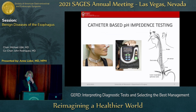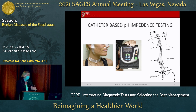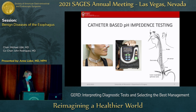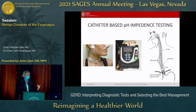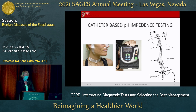For catheter pH impedance testing, the main advantage is that it gives you information on proximal events and allows you to differentiate between acid and non-acid reflux. It's my personal preference to offer patients catheter-based testing. Patients don't love having the catheter stick out of their nose, although patients wearing masks since COVID has made it more acceptable. The catheter can coil in the esophagus or be difficult to place in patients with a bad gag reflex or anatomic abnormality. The good thing about catheter-based testing is it doesn't require a repeat endoscopy.